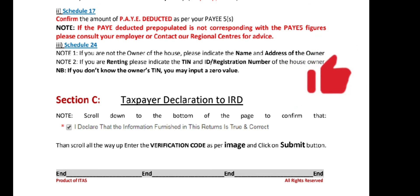Then we move on to Schedule 24 — you only complete this if you are renting. It will prompt you to answer whether the house you're staying in is yours or not. If not, put in the details as required: the owner's name, their address if you know it, and their TIN number. Just put 0.00 if you don't know the TIN.